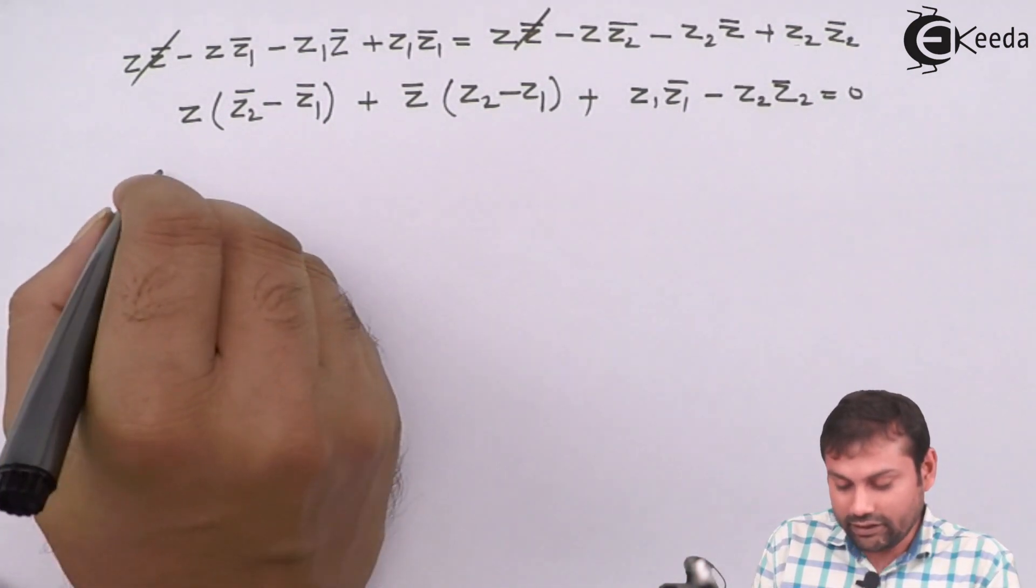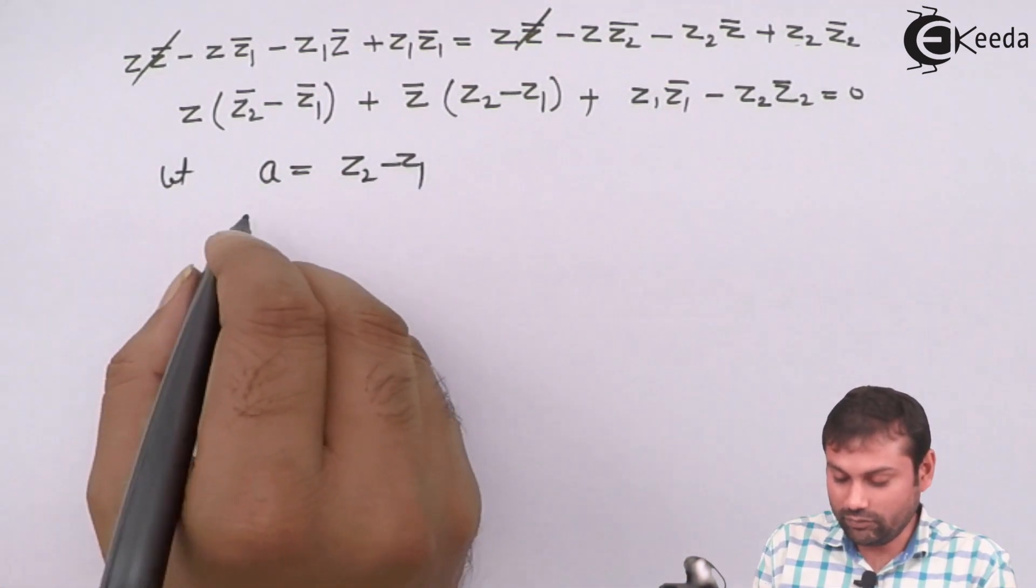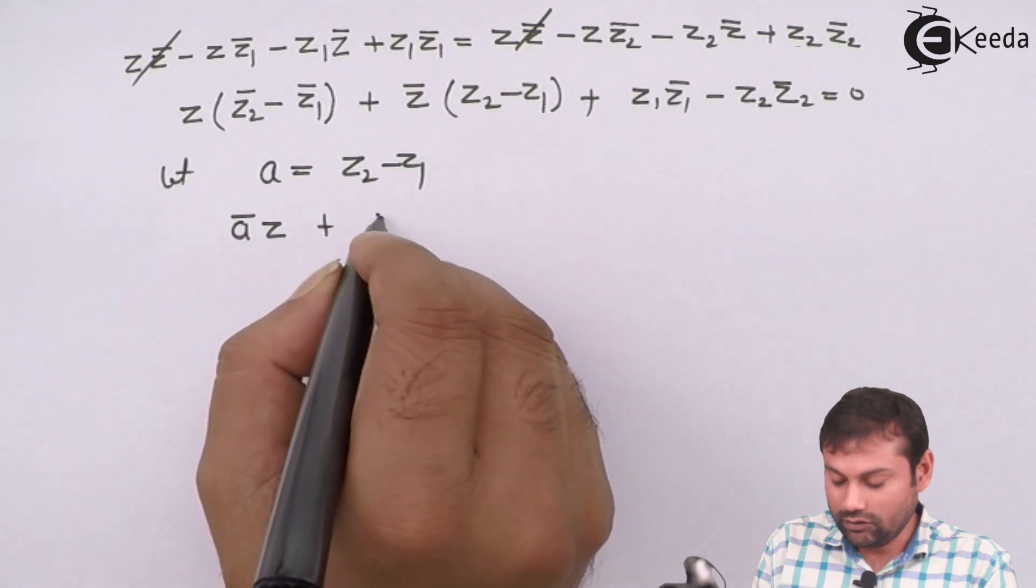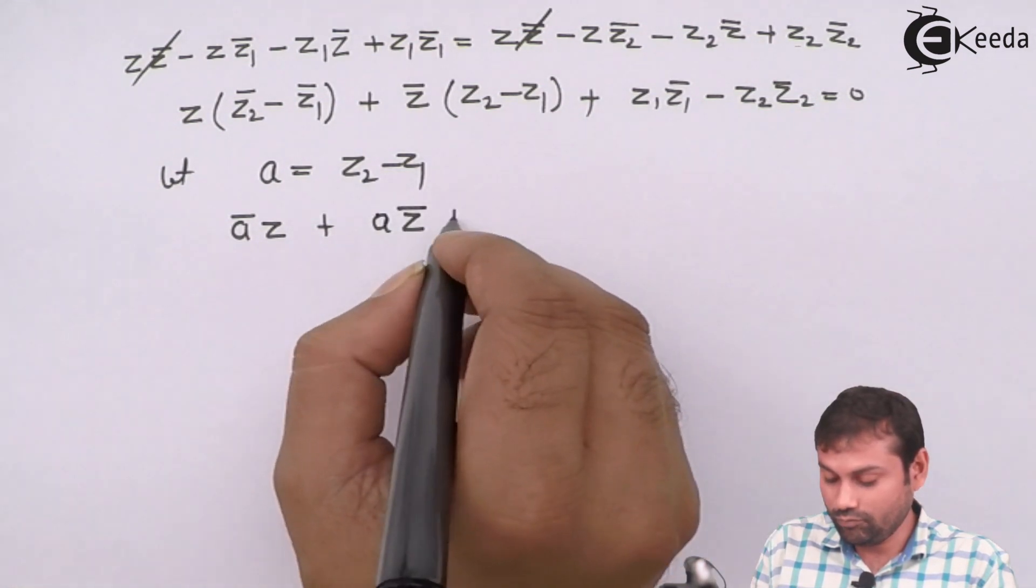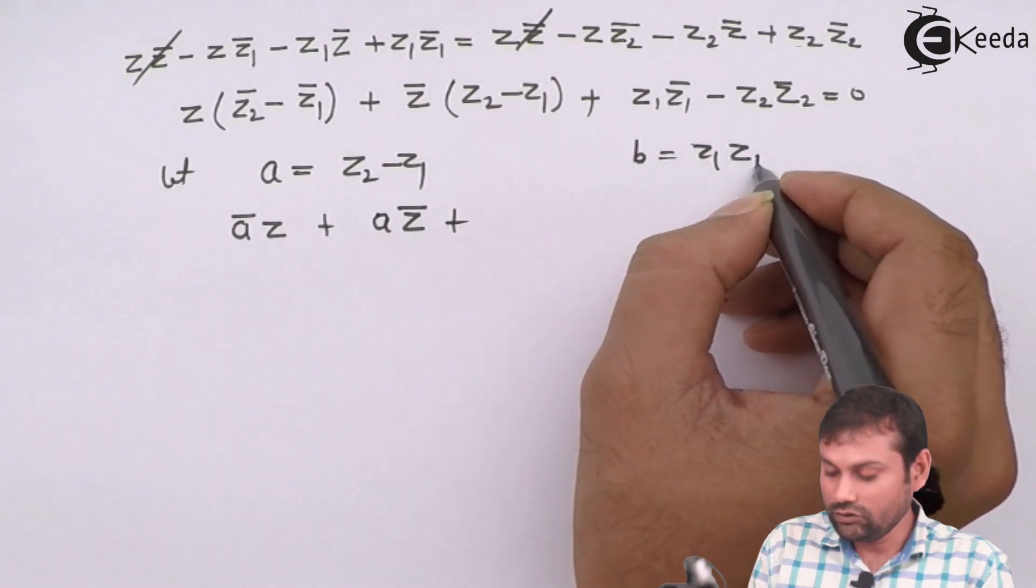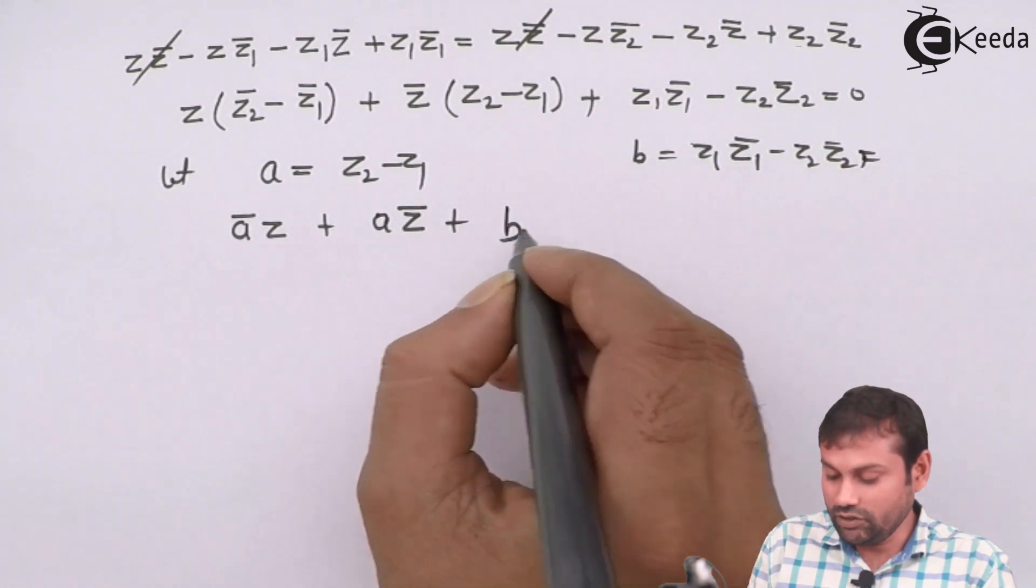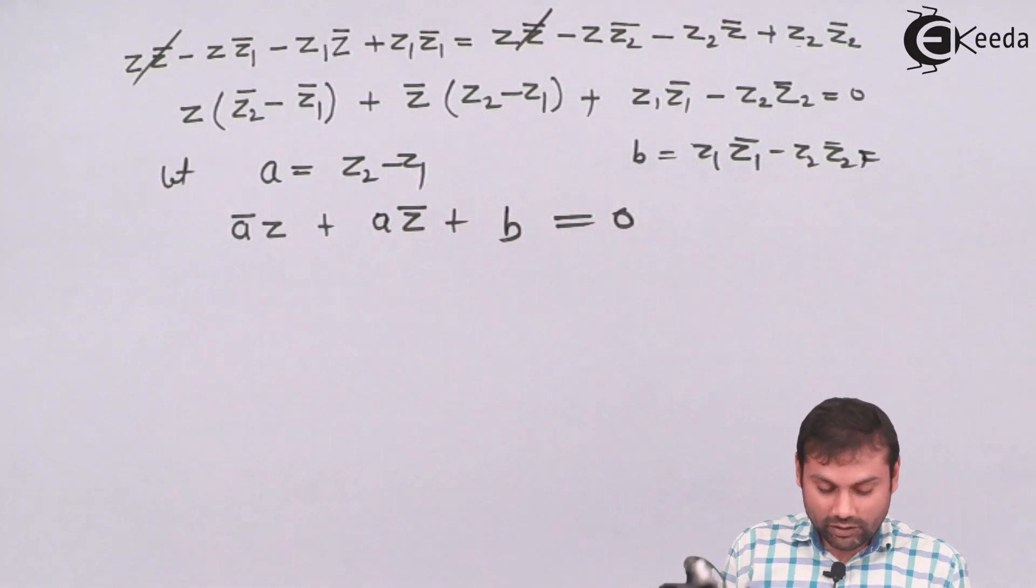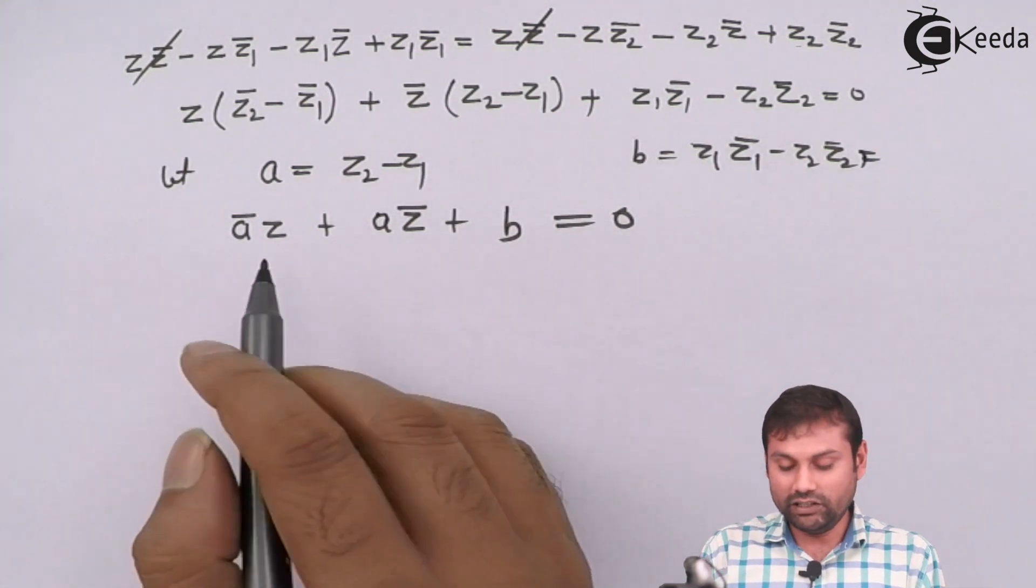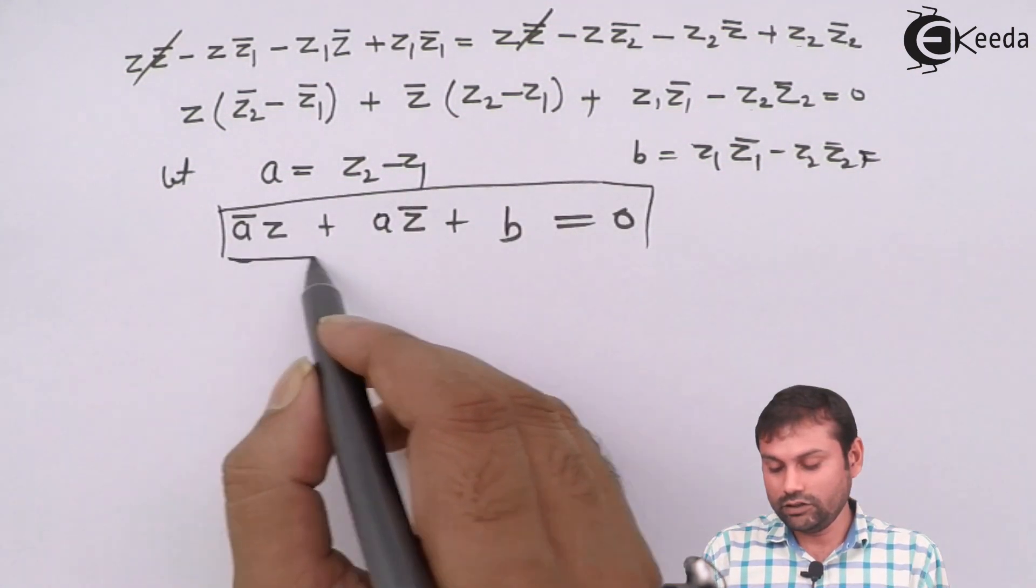Now let A equals to Z2 minus Z1. Then what we get? A bar Z here and A Z bar plus, and suppose this one is B equals to Z1 Z1 bar minus Z2 Z2 bar equals to 0. So we get the equation of perpendicular bisector passing through two points. That would be A bar Z plus A Z bar plus B equals to 0. So we will use this equation.